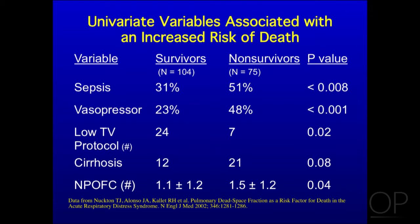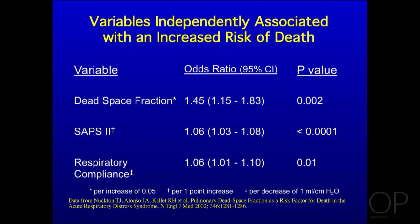Cirrhosis was not quite significant, and POFC — non-pulmonary organ failure — was also assessed. Then we put this into a multivariate analysis, and the three variables that turned out to be independently predictive of mortality were: pulmonary dead space fraction with the highest odds ratio at p=0.002, SAPS II as an index of severity of illness, and respiratory compliance. All others fell out.